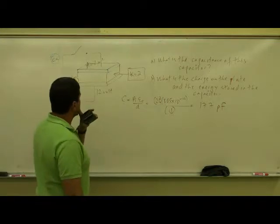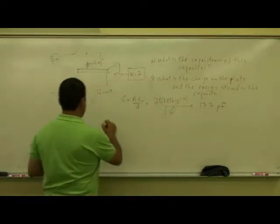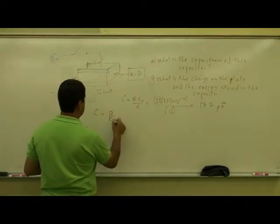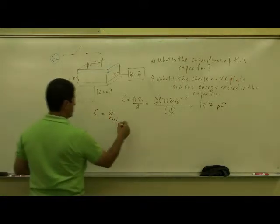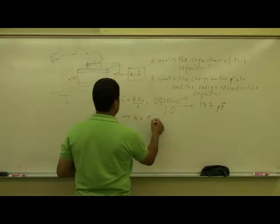Then what is the charge on the plate? Well, capacitance is defined as Q over delta V. So I've connected it to a 12 volt battery. So the charge is going to equal C times V.